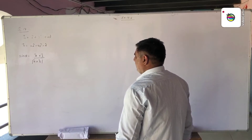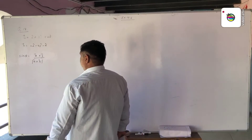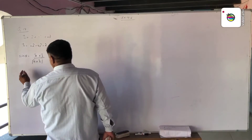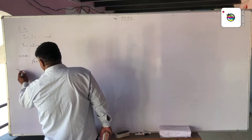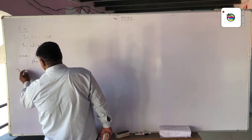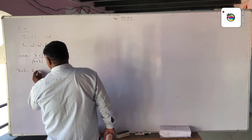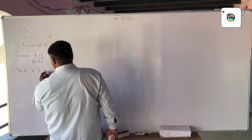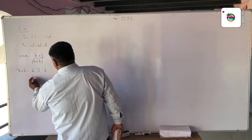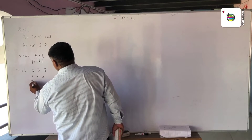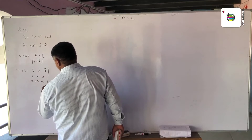First, we find vector A cross B. Vector A cross vector B is set up as the determinant with I, J, K in the first row, then 1, 3, 2 as the components of vector A, and 2, minus 4, minus 1 as the components of vector B.